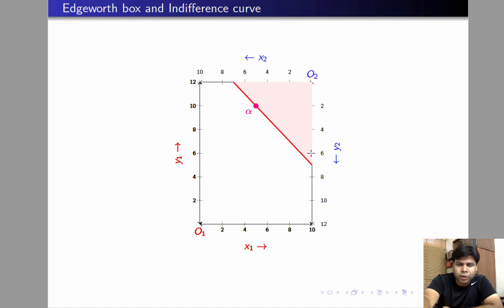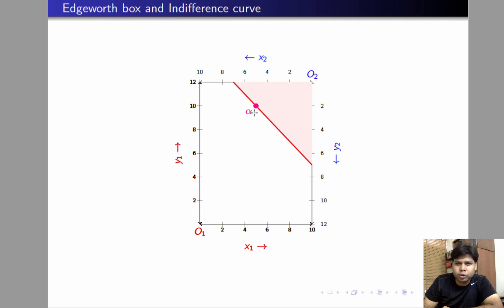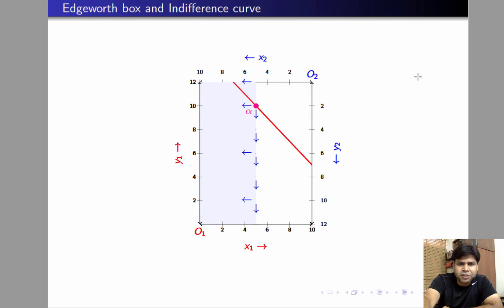Individual 2 has lexicographic preference for x over y, so given any two alternatives, he likes the alternative that offers him a higher amount of x. So any allocation that lies to the left of alpha will be strictly preferred by individual 2 over alpha. And if two alternatives offer him the same amount of x, then he prefers the one with a higher amount of y, so any alternative lying below alpha but not to the right of it will also be strictly preferred by individual 2 over alpha.